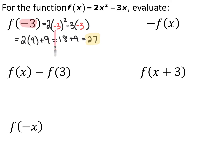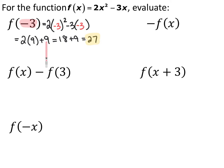So I end up with 2 times the quantity negative 3 squared minus 3 times negative 3. Negative 3 squared is 9, and negative 3 times negative 3 is positive 9. So you end up with 2 times 9 plus 9, which is 18 plus 9, or 27. The value of f of x at negative 3 is 27.